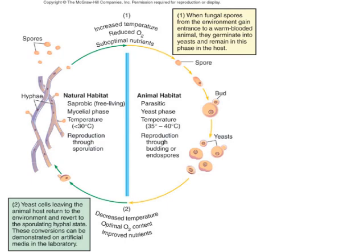Another thing I want you to understand is that this pathogenesis applies to all of them, so keep these in mind. The basic concept is that in the natural habitat — saprophytic, free-living — this is the mycelial phase. Temperature and reproduction is through spore formation. These spores, once released in the environment, are taken up by animals including us. Then they are parasitic yeast at a higher temperature, and reproduction takes place through budding or endospores. This is the typical fungal cycle for almost all dimorphic fungi — they exist in two forms.